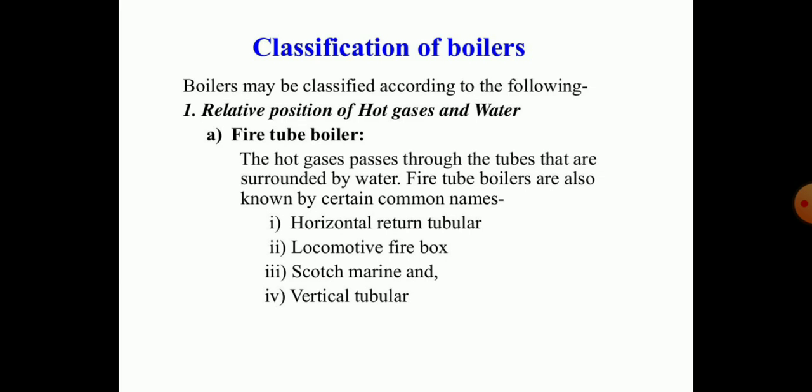Boilers may generate steam based on the relative position of hot gases and water. Hot gases may pass through tubes that are surrounded by water — such arrangements are called fire tube boilers. Common types of fire tube boilers include the horizontal return tubular boiler, locomotive firebox boiler, scotch marine boiler, and vertical tubular boiler.